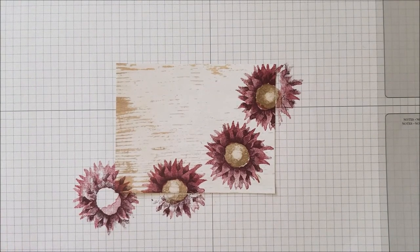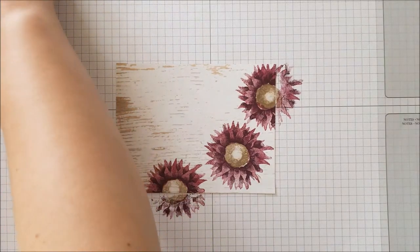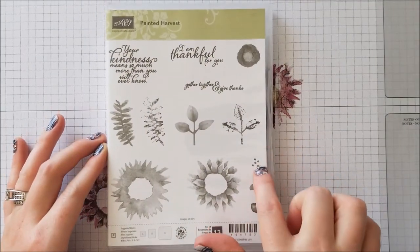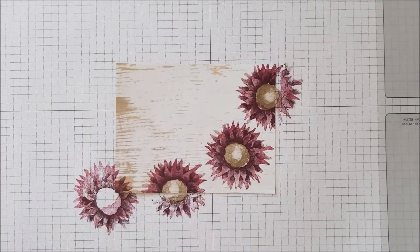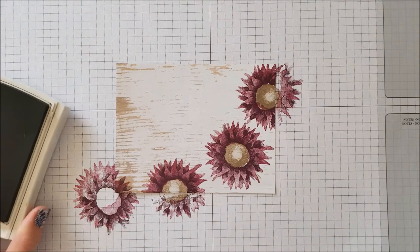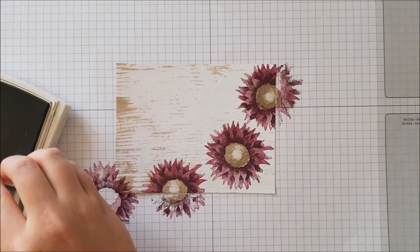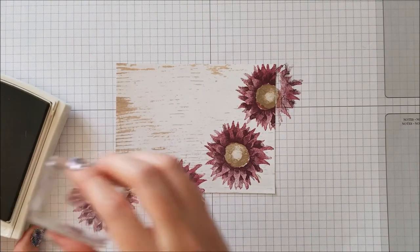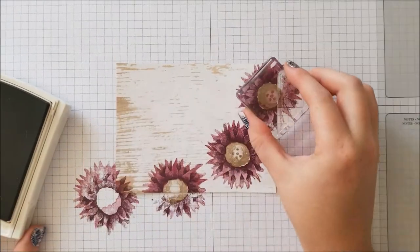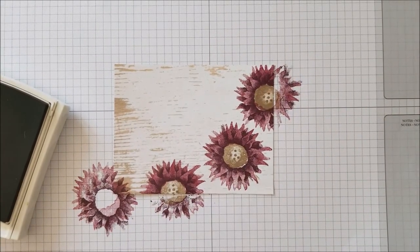So the next piece that we're going to use, I still have to pull out. This is what the stamp set looks like. And we're going to use these little circles right here. And I'm going to use Crumb Cake again for them. So we'll just gently get a little bit of ink on these and just going to stamp right in that light area in the center. All right, the flowers are all done.